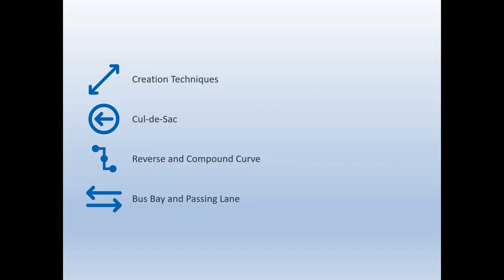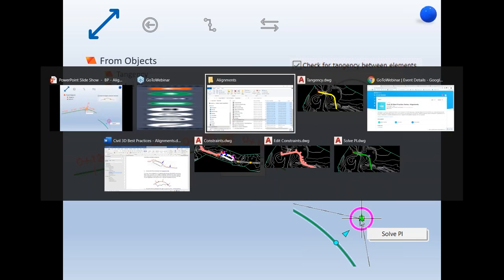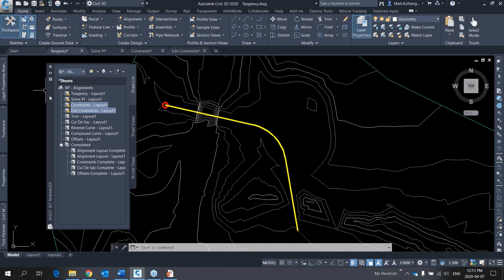Today is split into four major bundles: first, creation techniques — how to create alignments from polylines and when you don't have a polyline; second, parametric constraints that Civil 3D employs with alignments; third, cul-de-sacs; and then reverse and compound curves; and finally bus bays and passing lanes. This won't be death by PowerPoint — we'll be working in Civil 3D.